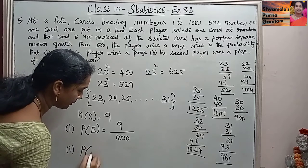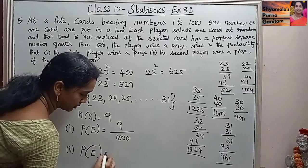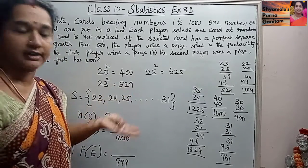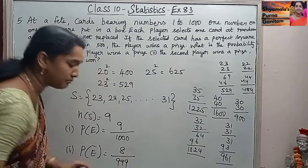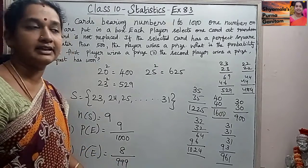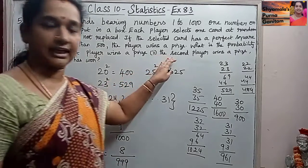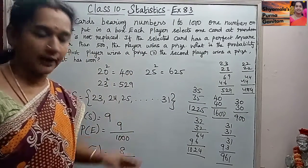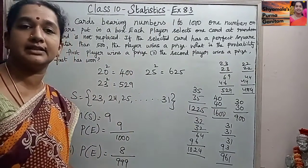So probability of E' will be, out of 999, one is already not there, so 8 by 999 is the answer for the second one. That is, the second player wins a prize if the first player has won. So 8 by 999 is the answer.